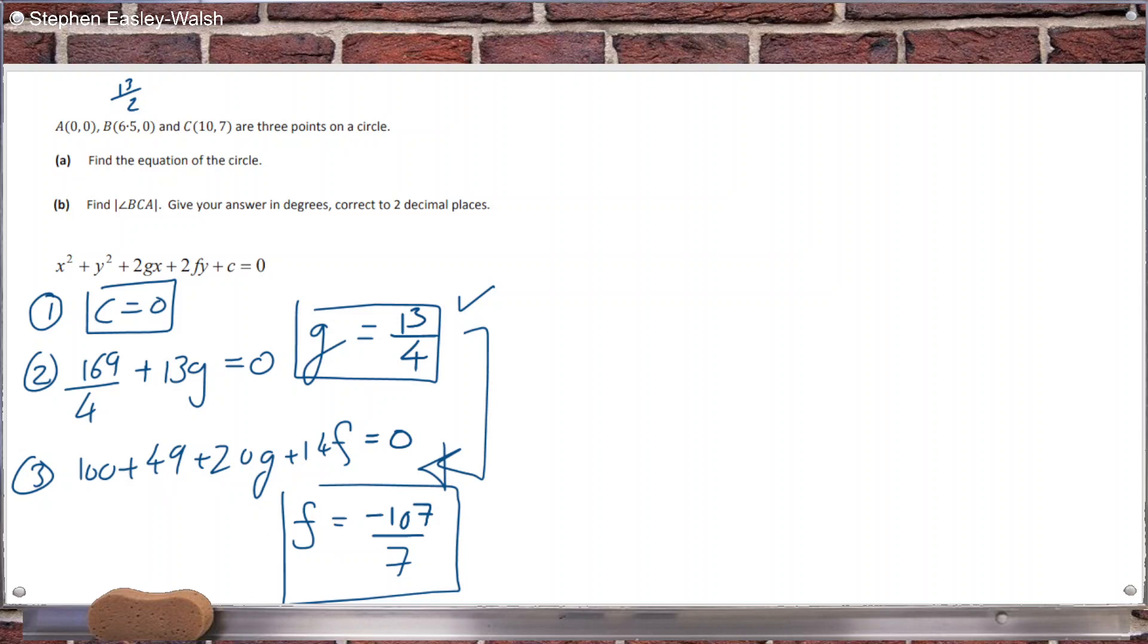So why is this gone so weird? I'm doing something silly. I can't even see it. 10 squared, 100, 7 squared, 49, 2 times 10, that's 20. And then 2 times 7, 14F.